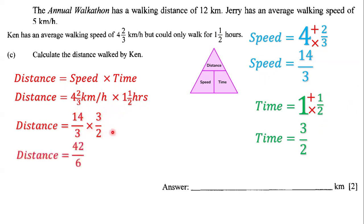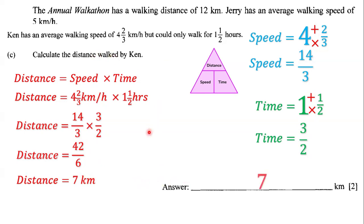We multiply: 14 times 3 is 42, and 3 times 2 is 6. So we have 42 divided by 6, which is 7 kilometers. That means the distance walked by Ken is 7 kilometers, and that's the answer.